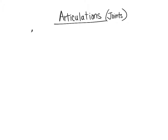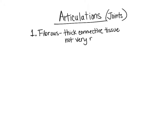The first type is the fibrous joint. As its name implies, it's very fibrous, meaning it's a strong joint composed of thick connective tissue. One of the main things about these types of joints is that they're not very movable — they are very tight joints that don't move very much.